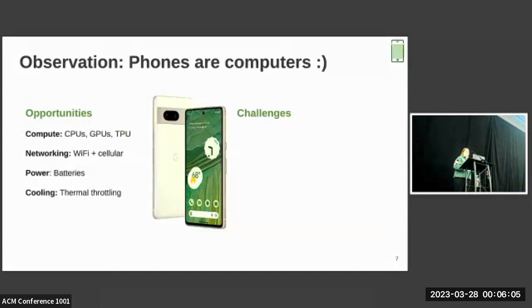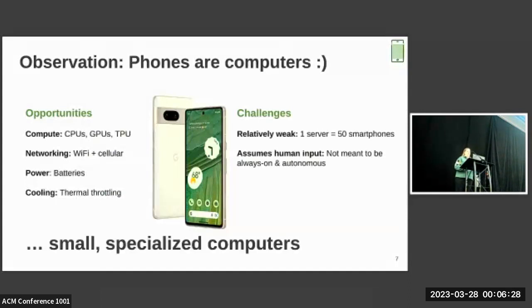Of course, there are also associated challenges. Notably, phones are relatively weak. We calculate that one server is approximately equivalent to 50 smartphones, so we need a way to aggregate these relatively small devices. Furthermore, the mobile software stack assumes human input. Your phone is not meant to be always on and autonomous. And most notably, mobile OSs will kill or throttle long-running processes to save battery. So yeah, phones are computers, but they're small, specialized computers, and they were never meant for what we're trying to do with them here.